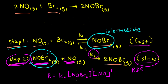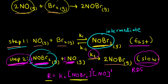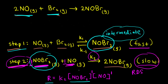However, we can't leave the rate law for the overall reaction in terms of the concentration of our intermediate NOBr2. It's preferable to have rate laws written in terms of the concentrations of our reactants, which were NO and Br2. So we need some way of substituting in for the concentration of NOBr2.